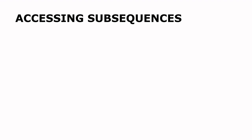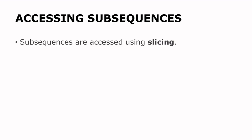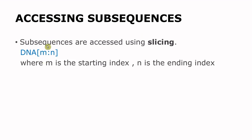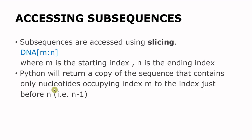Now instead of individual nucleotides, we might also want to get access to subsequences — that means we want to extract portions of the sequences. And so to do that we use slicing. With slicing we enter two indexes M and N, where M is the starting index and N is the ending index. This means that when we do this query, Python is going to return all nucleotides that are in this region starting from M and ending at the position just before N, that is N minus one. You should also know that a copy is what is going to be returned, so your original sequence will not be modified in any way.